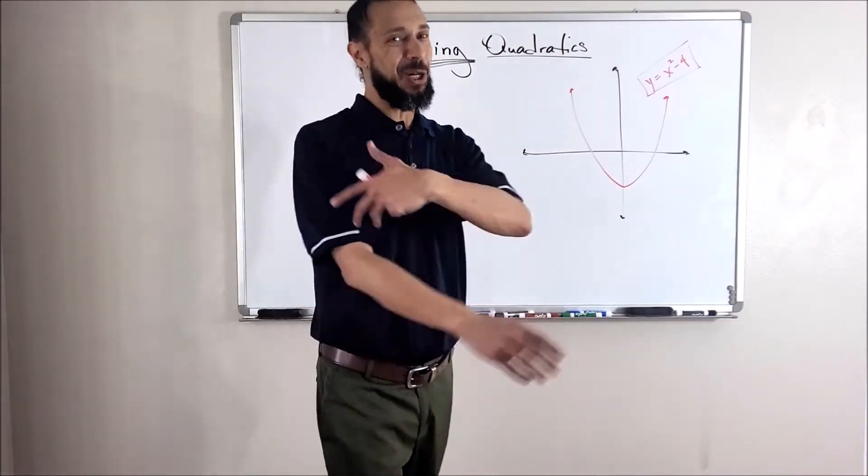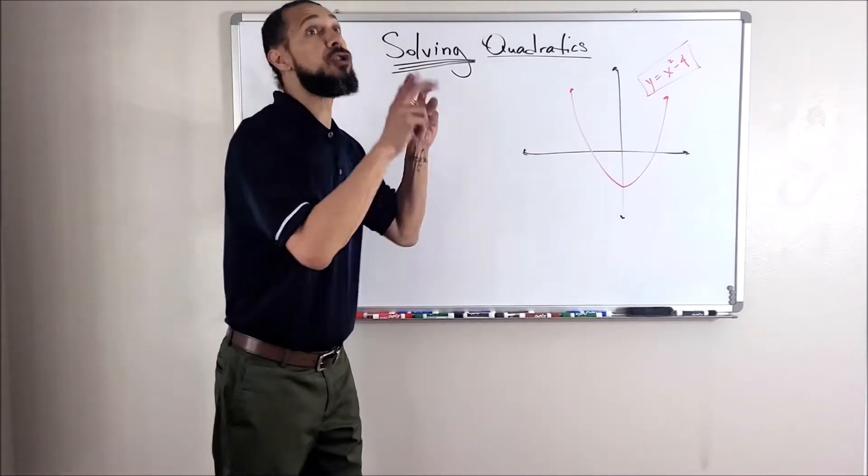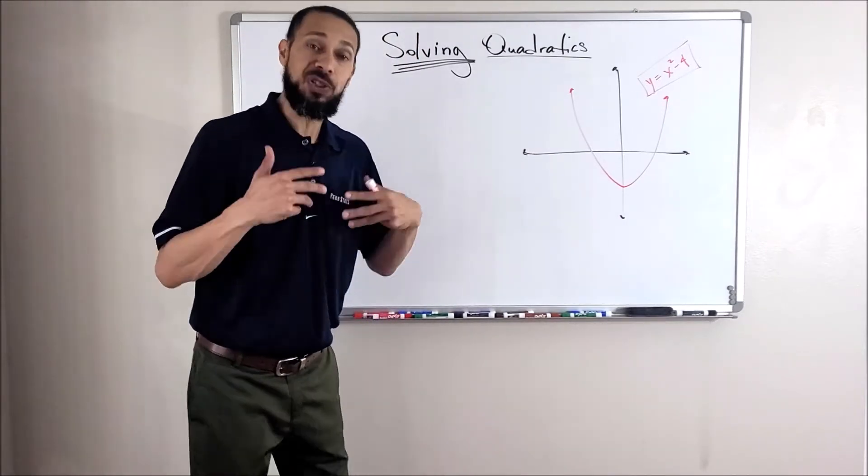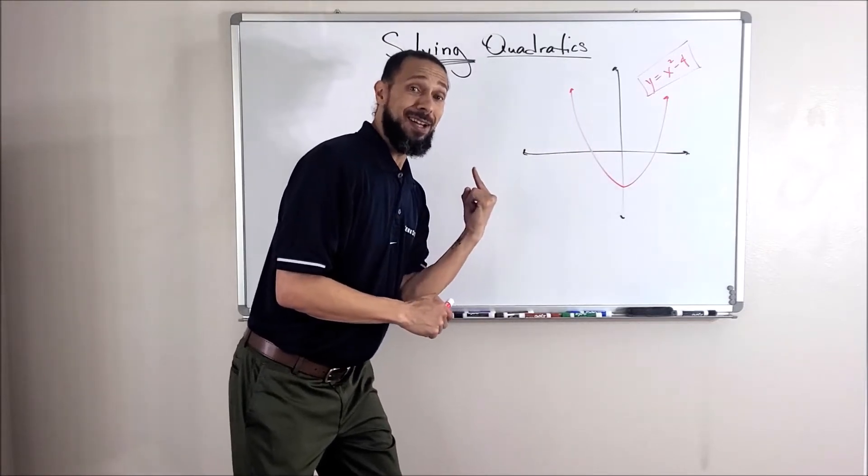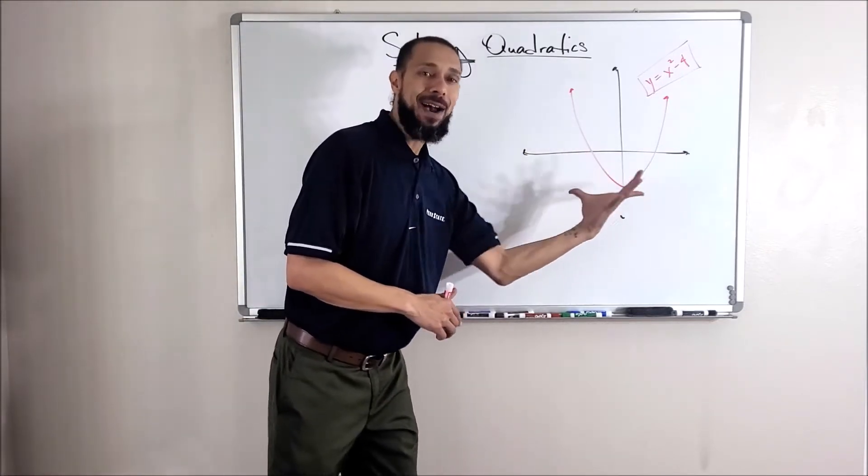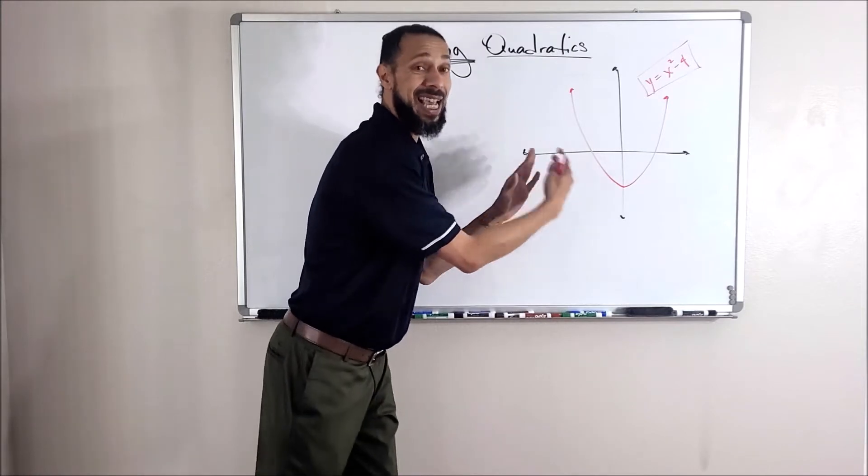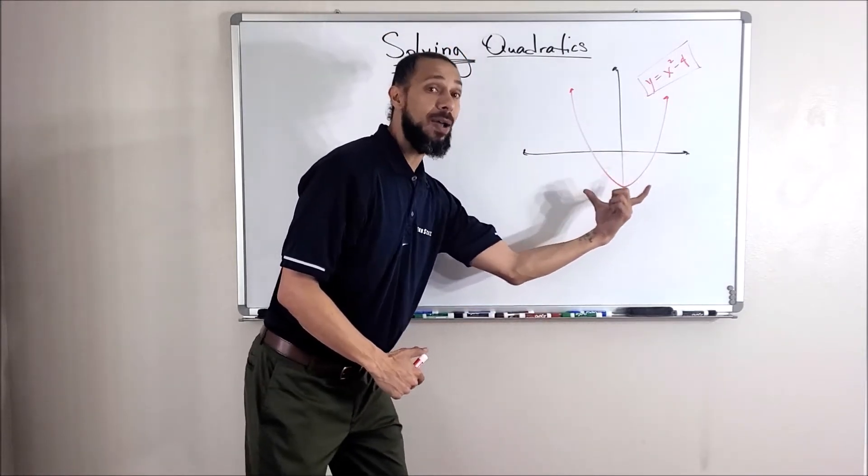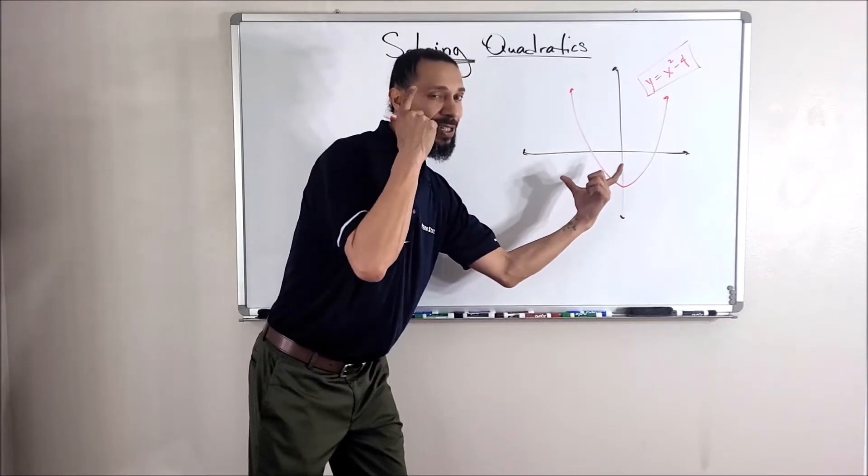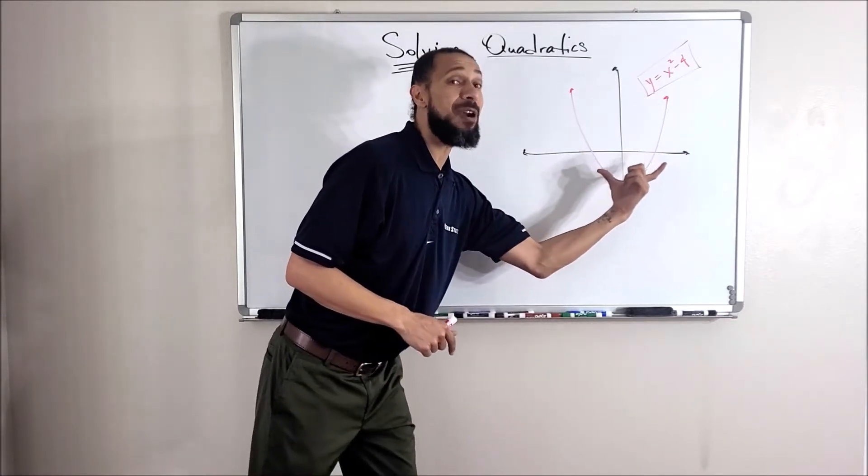This looks like a good one. So let's say I wanted to solve this quadratic, which really means I want to know where this graph is crossing the x-axis. And now I'm not always going to have a graph. Maybe sometimes if I sketch my graph, I don't know exactly where these points are. But using a little bit of strategy, I can figure out where these points are.